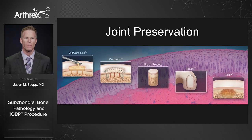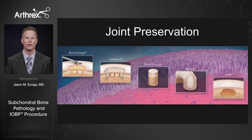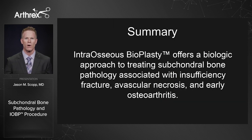This presentation has focused on the importance of managing and understanding subchondral bone pathology. We've introduced terms to ensure we are talking about the same thing — understanding that an insufficiency fracture is not the same as avascular necrosis, so treatments may differ. We've learned about the bone healing triad — cell, signal, and scaffold — and how intraosseous bioplasty takes advantage of all three to treat the joint as an organ. In conclusion, intraosseous bioplasty offers a biologic approach to treating subchondral bone pathology associated with insufficiency fractures, avascular necrosis, and early osteoarthritis.